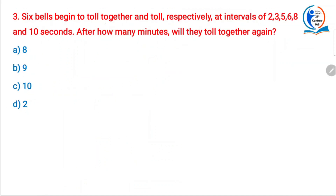Next question: 6 bells begin to toll together and toll — meaning ring — respectively at intervals of 2, 3, 5, 6, 8 and 10 seconds. After how many minutes will they toll together? There is an easy way of doing it — you have to take the LCM of 2, 3, 5, 6, 8 and 10. But why you are supposed to take the LCM is the key question.